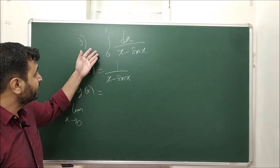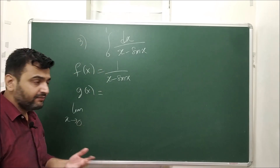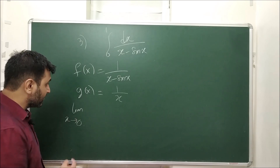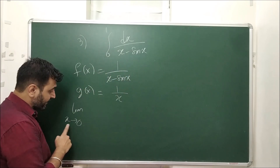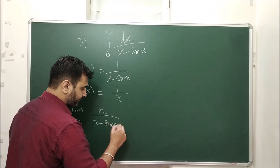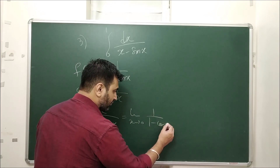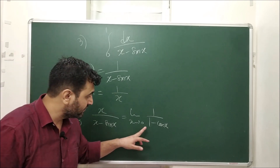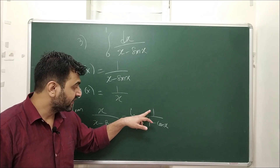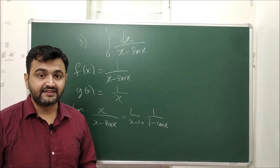Let's go to the third example — again improper integral of type 2. The function is 1/(x − sin x), and ignoring trigonometry gives G = 1/x. Taking the limit as x → 0 of f/g = x/(x − sin x), which is 0/0, apply L'Hôpital: we get 1/(1 − cos x). As x → 0 this becomes infinite — numerator is nonzero, denominator is 0 — so you cannot apply L'Hôpital rule again and the limit is infinite. You cannot apply limit comparison test.